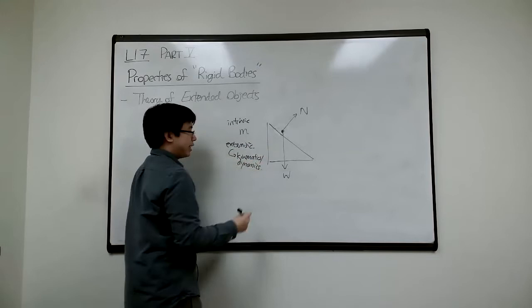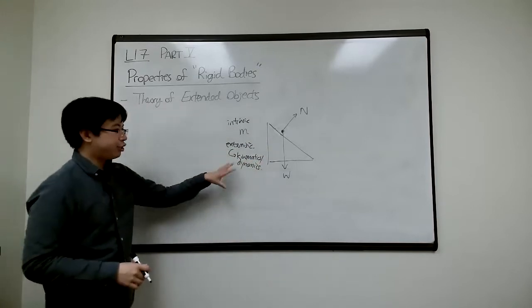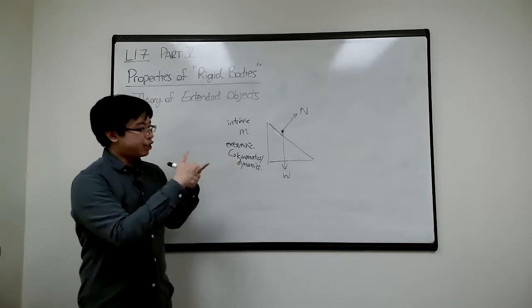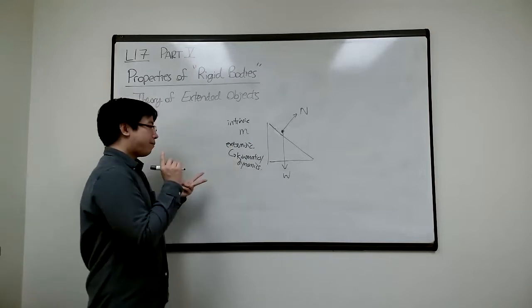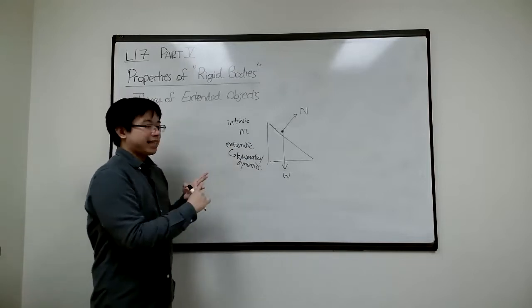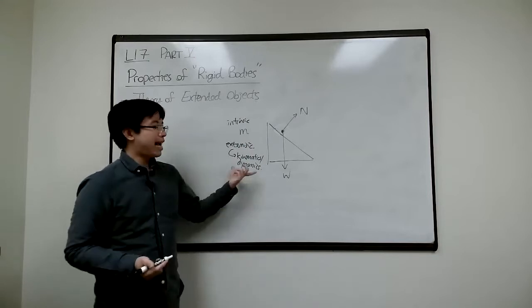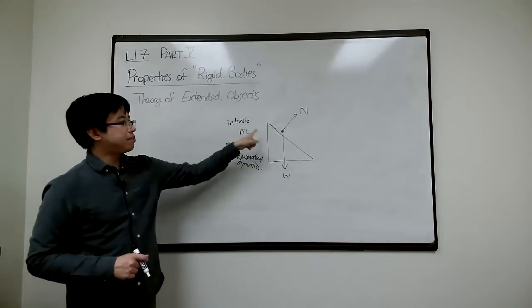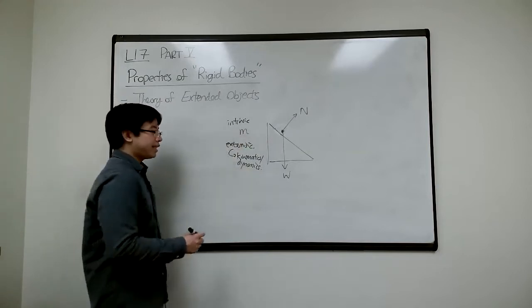It has extrinsic properties such as the kinematics properties and dynamics properties. Kinematics usually refers to the position, that's a kinematic variable, velocity, and acceleration. It's about its motion. Dynamic is about its forces on it. These are external properties. The object's mass is not going to change. That's the intrinsic property.